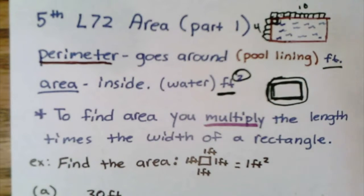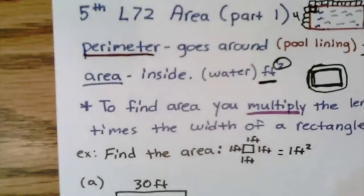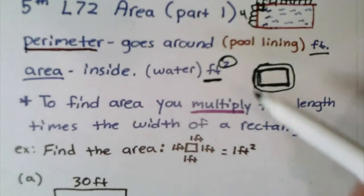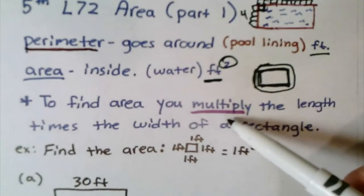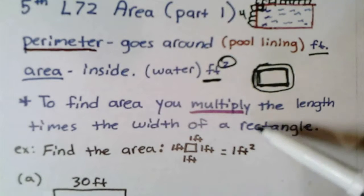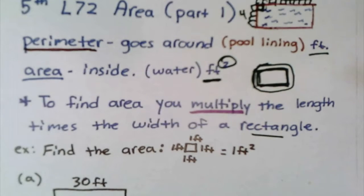To find the area—we already know how to find perimeter, right? We add up all the side lengths. To find the area, you multiply the length times the width of a rectangle, or actually any parallelogram: you multiply the length or base times the width. Let's look at some examples.